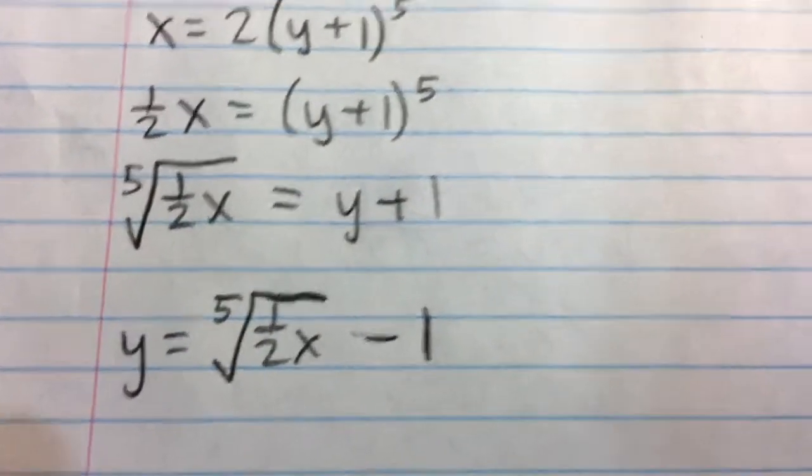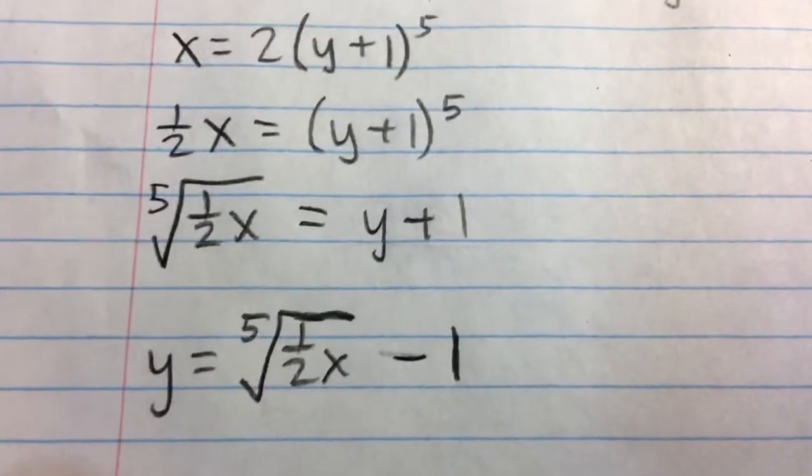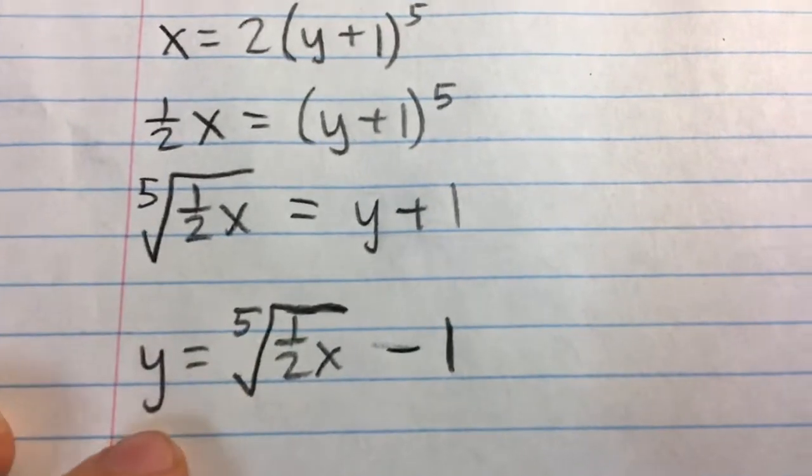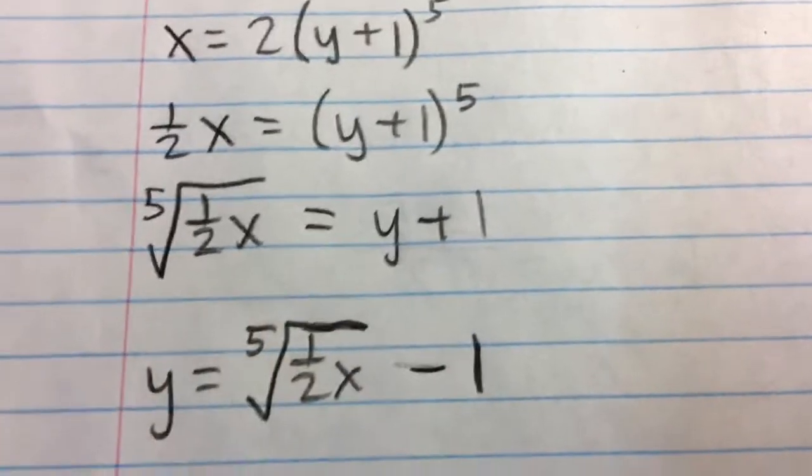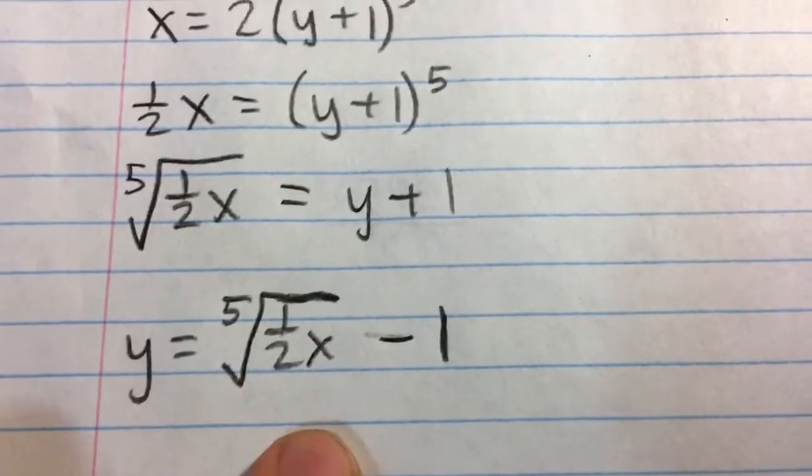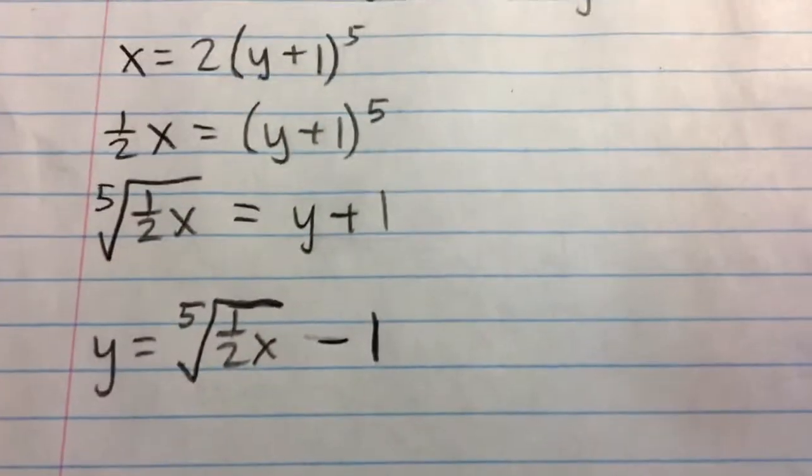So I have y plus one on the right. I isolate y by subtracting one from both sides, and so I end up with y is equal to the fifth root of one half x minus one. And so that is our inverse function of our original equation.